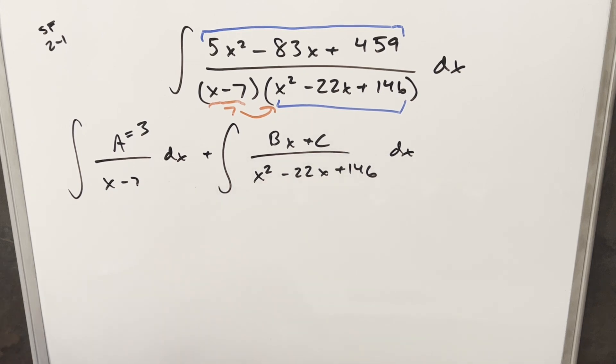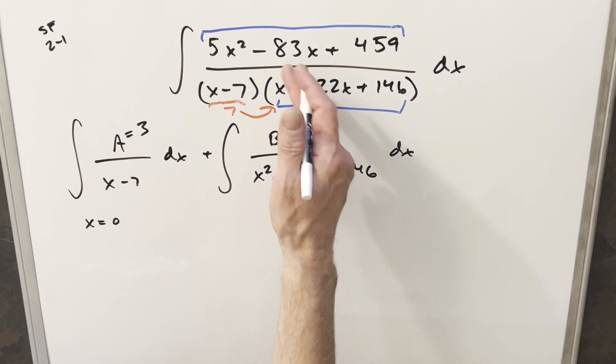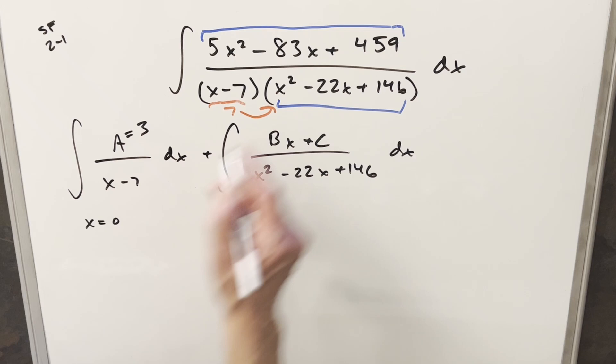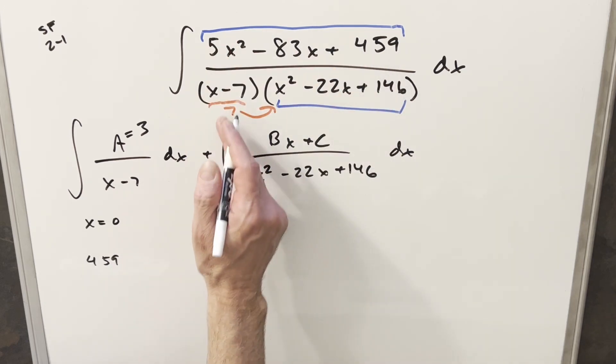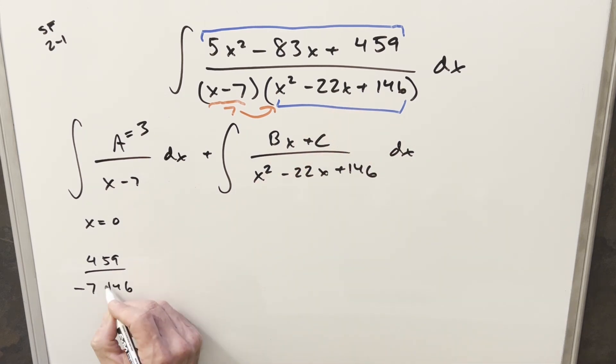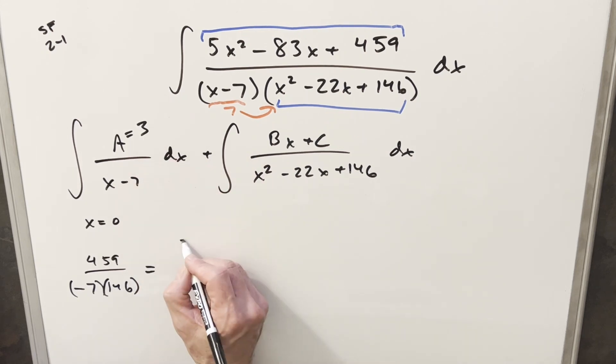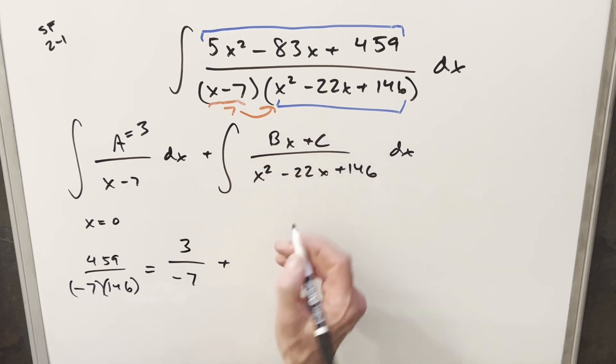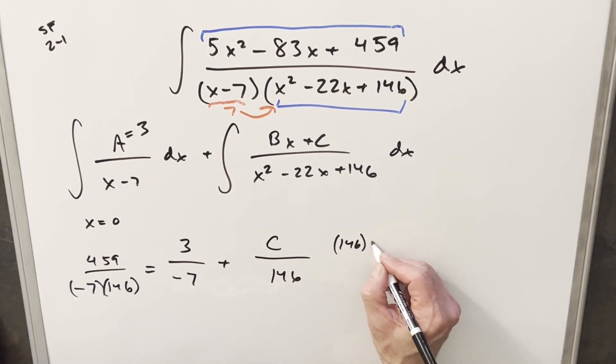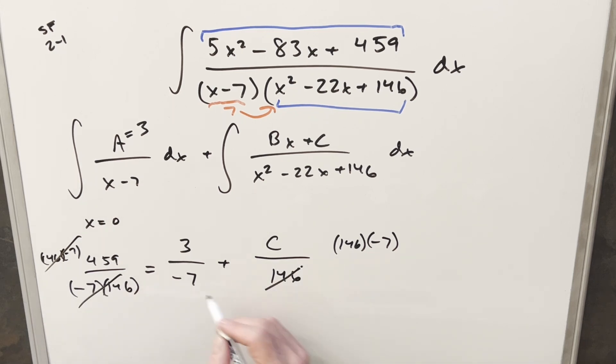And now to get our B and C values, I can just use some convenient x values. We can take x equals zero, so it's going to wipe a lot of this stuff out. If I plug zero into everything here, we're going to end up with just 459 in the numerators. We're going to have a minus seven here. And then this is going to become just a 146. And then we're going to equate all this to these terms here. So we're going to have our A, which is three times minus seven. Then plugging in Bx plus C with zero for x, the B term gets wiped out and we just end up with C over 146. And what I can do for the simplification, I'll just multiply by 146 times minus seven on both sides here. We're going to end up with 459 and we're going to end up here with a minus seven times C. And then solving this for C, we're going to have just minus three. So we'll plug this in right here.